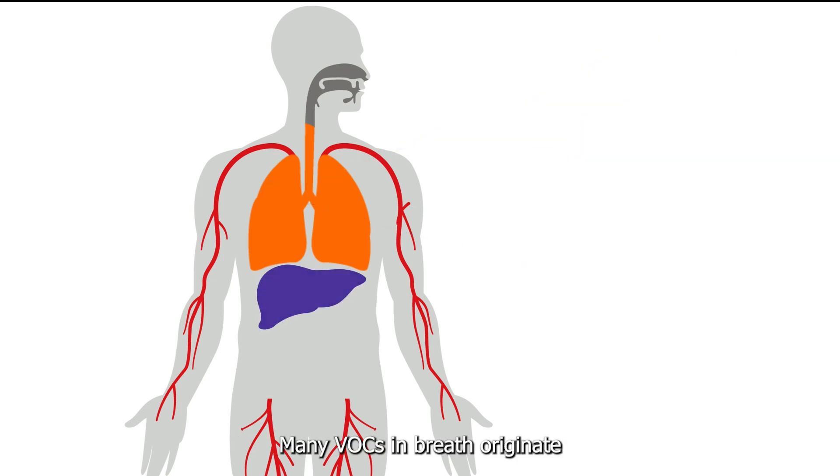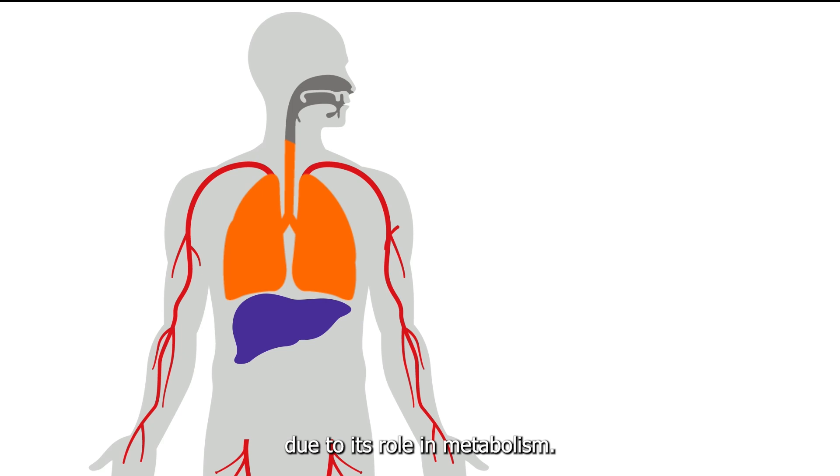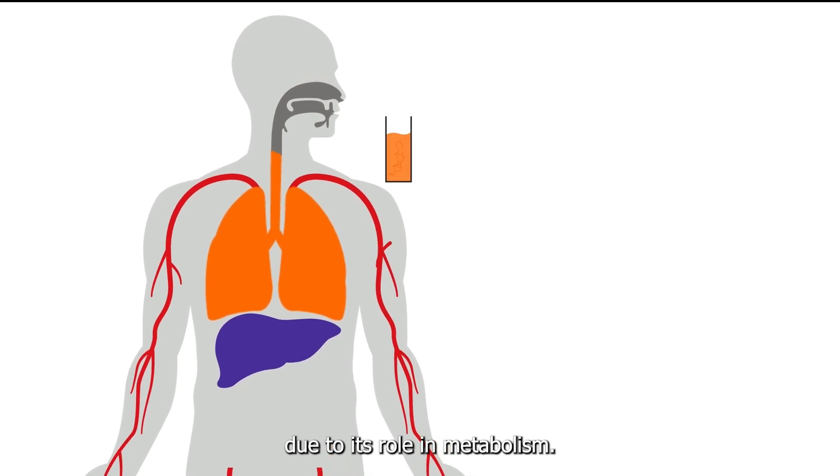Many VOCs in breath originate in the liver due to its role in metabolism. For example, studies have found that patients with liver disease show significantly higher levels of limonene in the breath compared to healthy cohorts for several hours after the limonene has been ingested.